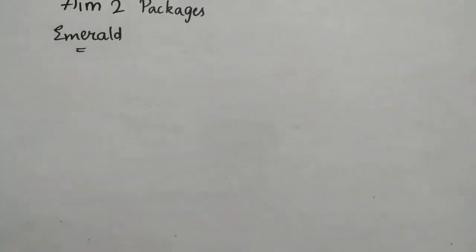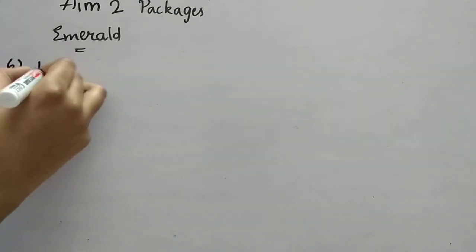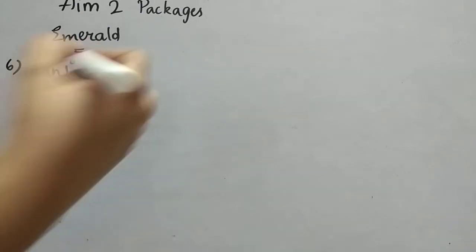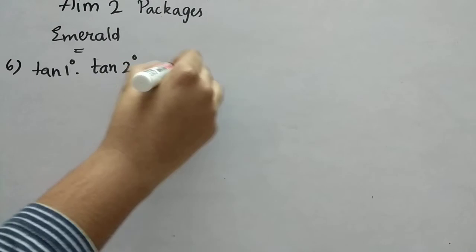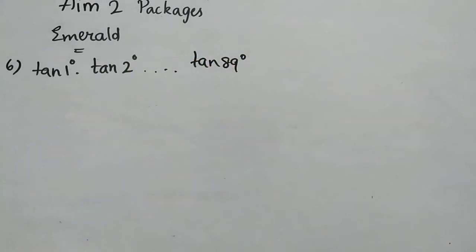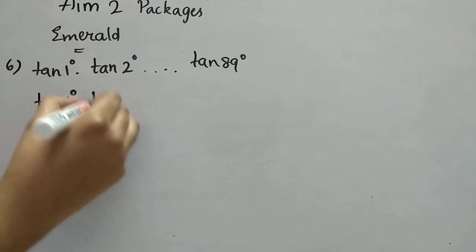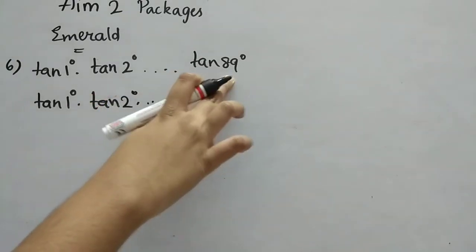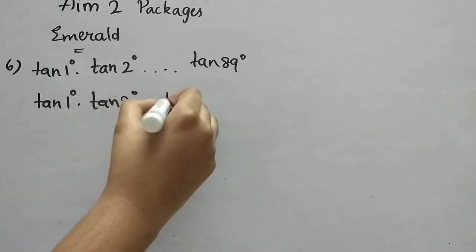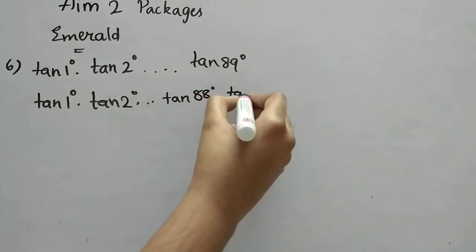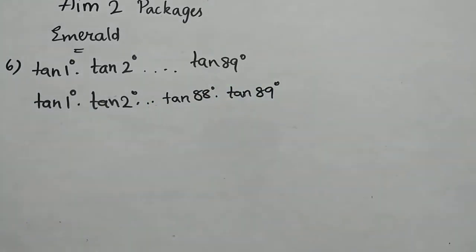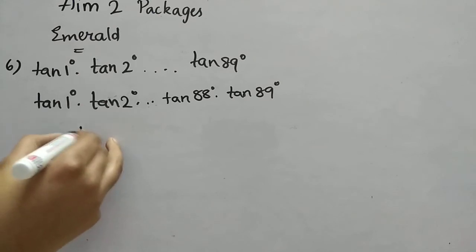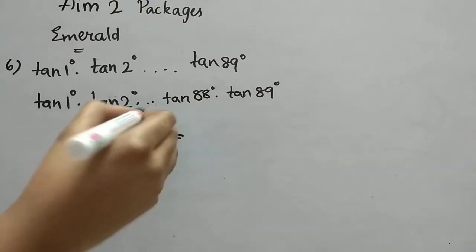Sixth question: tan 1° × tan 2° × ... × tan 89°. Using the formula tan(90° − θ) = cot θ, we can pair tan 89° = cot 1°, tan 88° = cot 2°, and so on. So we can write the product including cot 2° and cot 1° at the end.